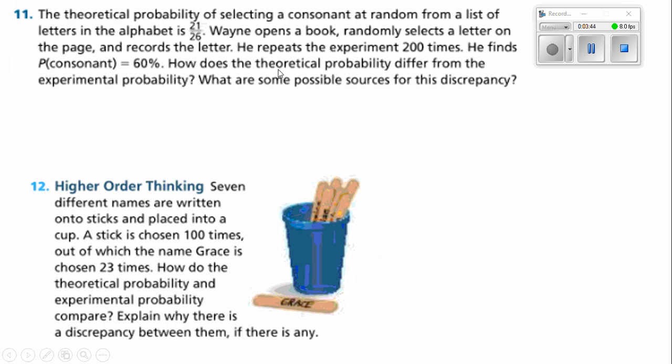Number 11 says the theoretical probability of selecting a consonant at random from the list of letters in the alphabet is 21 out of 26. That makes sense, because A, E, I, O, U are vowels, and that's 5 of them. So, 26 minus 5 is 21. Wayne opens a book, randomly selects a letter on the page, and records the letter. He repeats the experiment 20 times. He finds the probability of landing on a consonant 60%. How does the theoretical probability differ from the experimental probability?